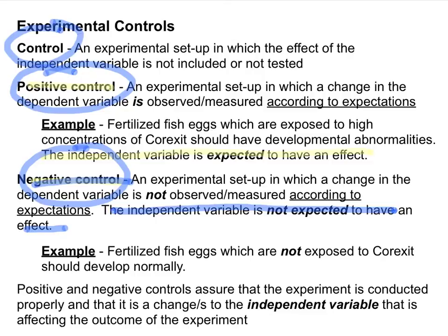The negative control is a setup in which a change in the dependent variable is not observed or measured according to expectations. You set up your experiment in such a way where you do not expect there to be a change in the dependent variable — thus, the independent variable is not expected to have an effect. The control that you've encountered in previous classes is the same as the negative control. What I want you to be aware of is that there are other types of controls, in this case the positive control, where you expect there to be a change in the dependent variable. The negative control lacks the independent variable, and when you omit that independent variable, you would not expect there to be a change to the dependent variable.